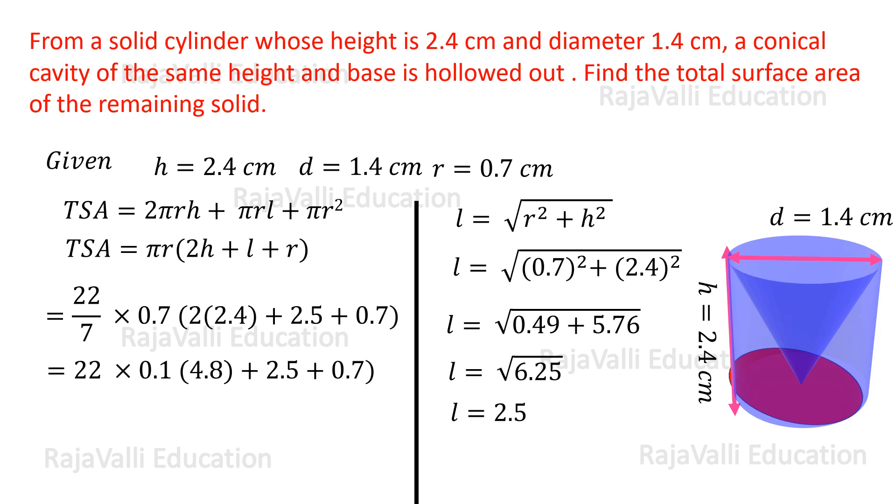Substituting these values in this equation, we get TSA = 17.6 cm². This is the answer. Thank you.